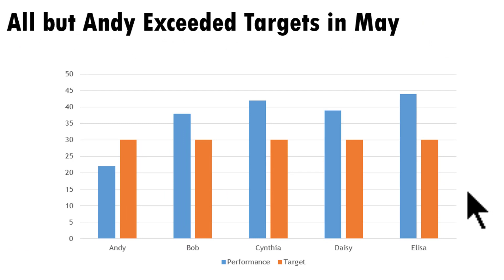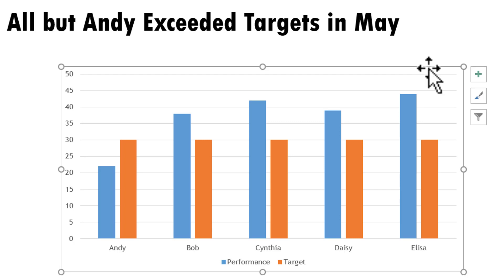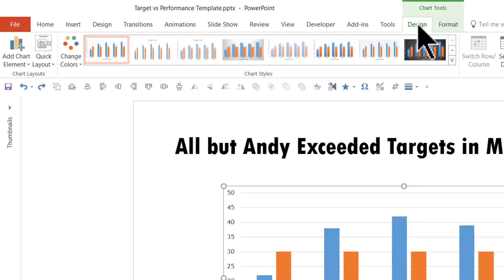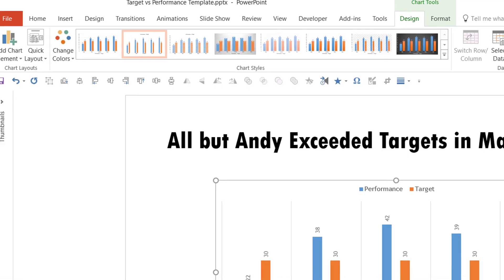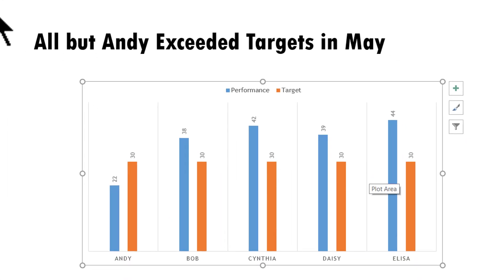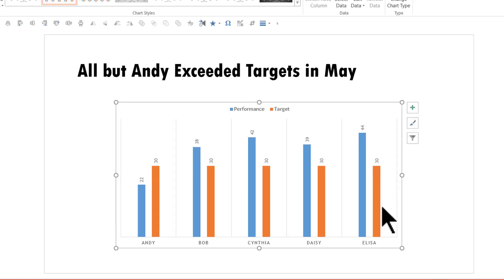Most presenters stop here. They don't really think about how they can make this chart look any better. Now I'm going to show you some simple ways in which you can improve the look and feel of this chart. First I'm going to select this chart and then let me go to the Design tab in PowerPoint ribbon and the first thing I'm going to do is to see if there are any chart styles that are better than the default option here. The one that I really like is Style 2 and as you can see here, this is a far more improved version. There are a couple of reasons why I feel that this particular layout is far better.